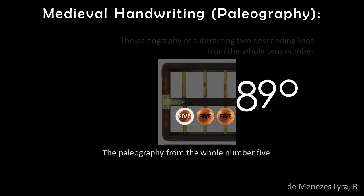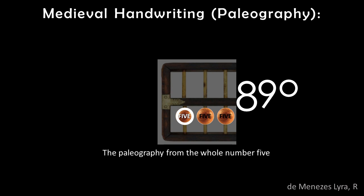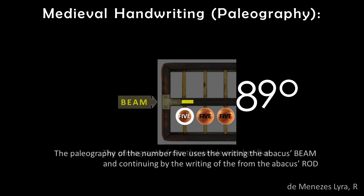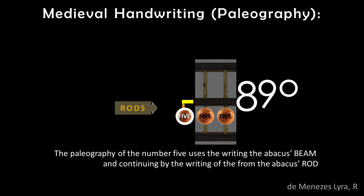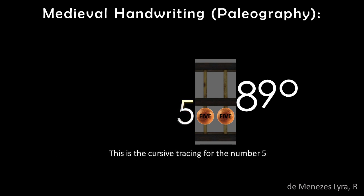This bead has a value of 5, so this is the paleography for the whole number 5. The writing of the digit 5 is begun by drawing the beam of the abacus, followed by the drawing of the rod descending to the bead. The digit is then terminated by partially circling the bead itself, which has the value of 5.